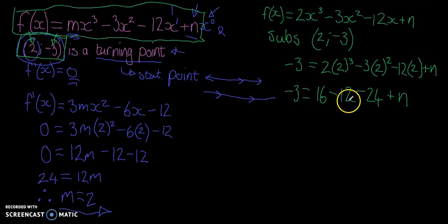Okay, so 16 minus 12 is going to be 4, minus 24 is going to be minus 20. Take it over to the other side and we're going to get 17 equals n. Isn't that a thing of beauty?